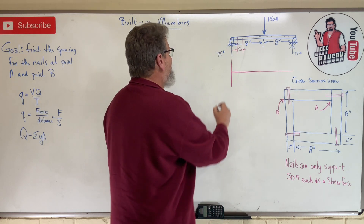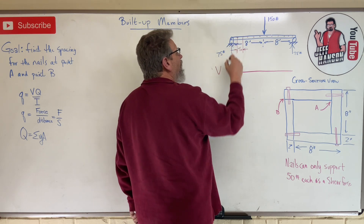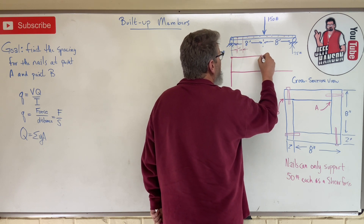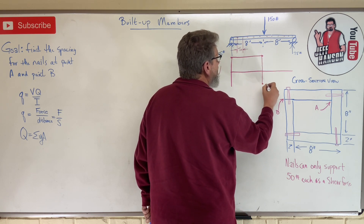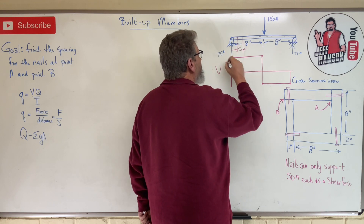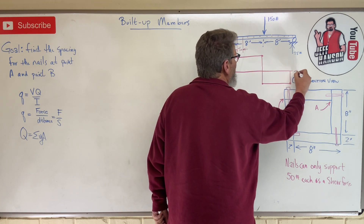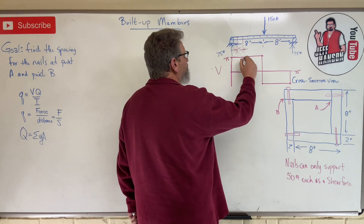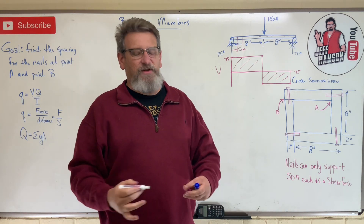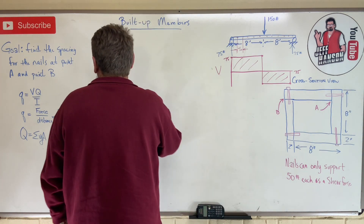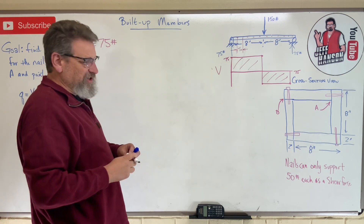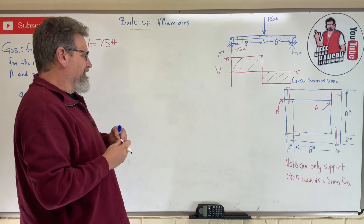The V diagram goes up 75, no change across, then drops 150 at the load, then back up 75 at the right support. So this is 75 and this is 75. No matter where you are on that beam, the shear force is 75 pounds. So V equals 75 pounds.